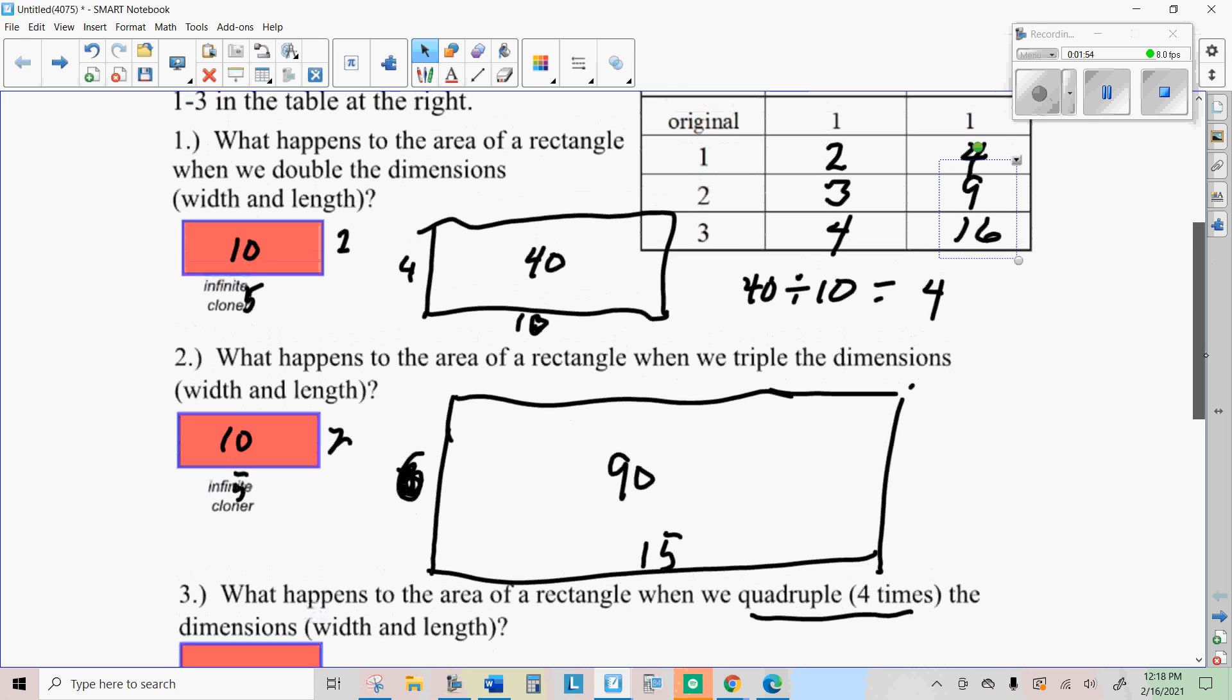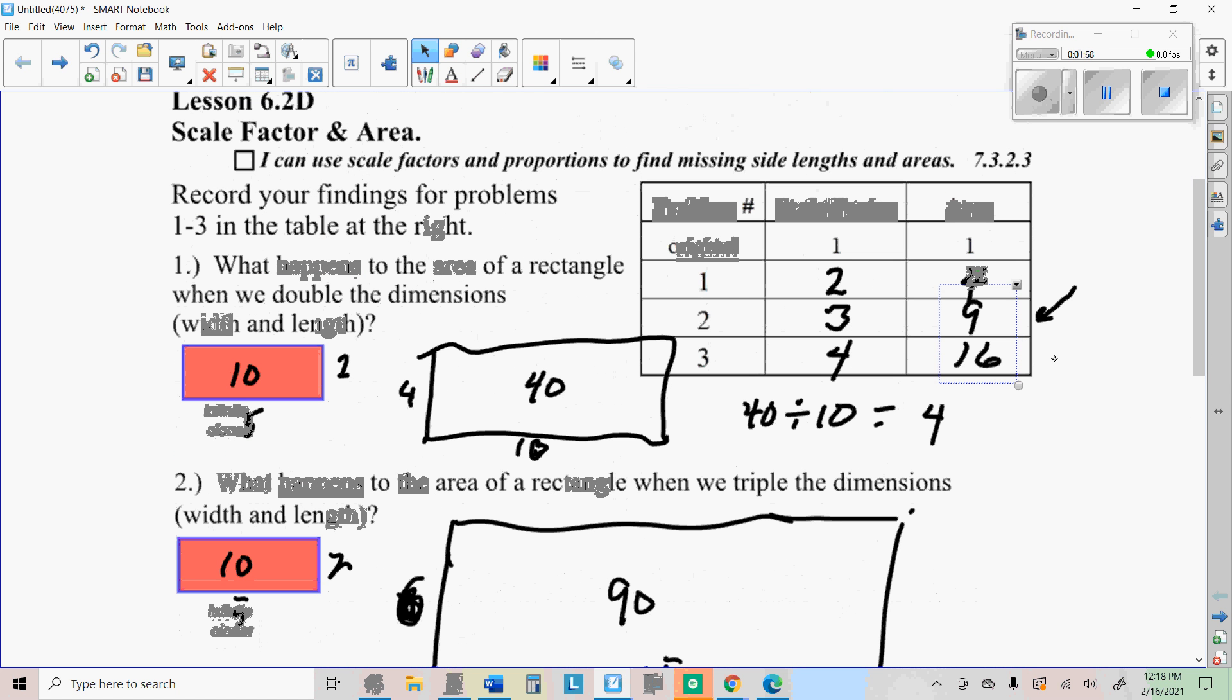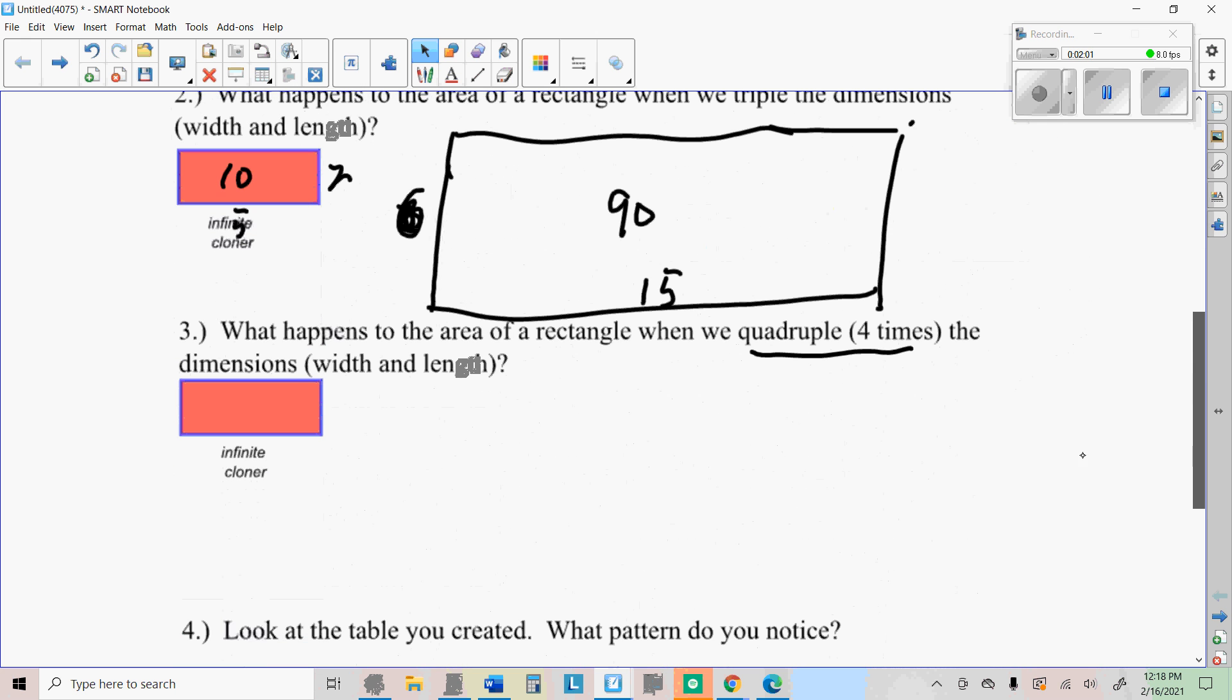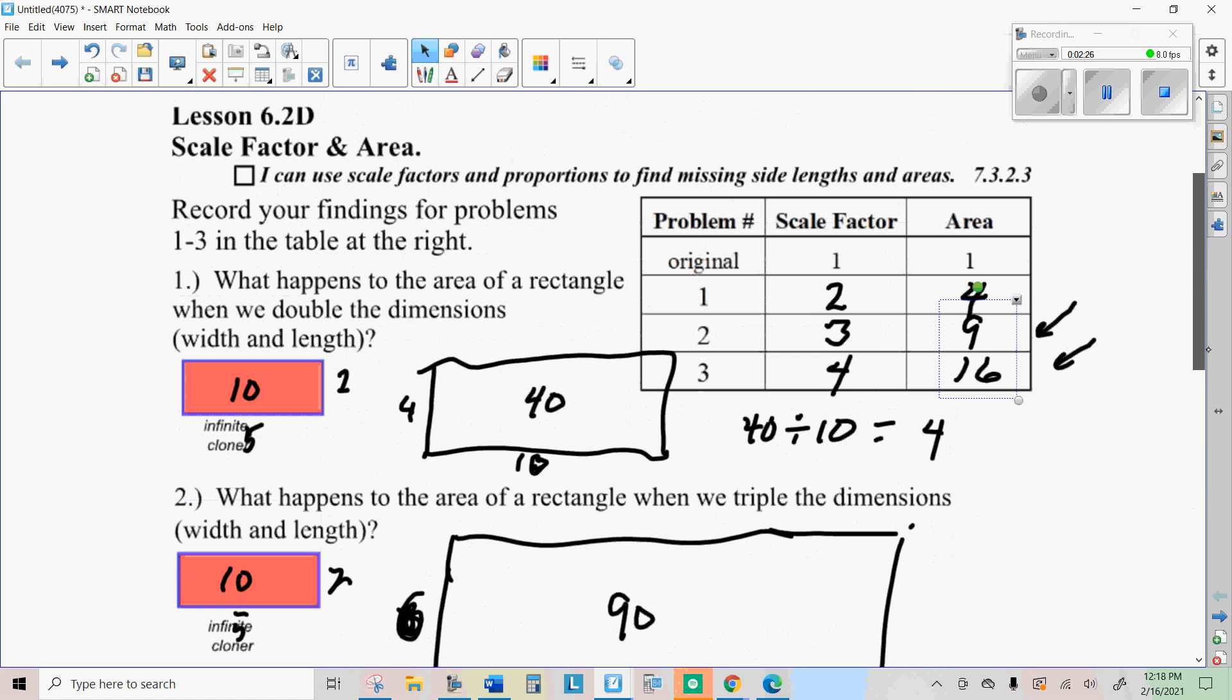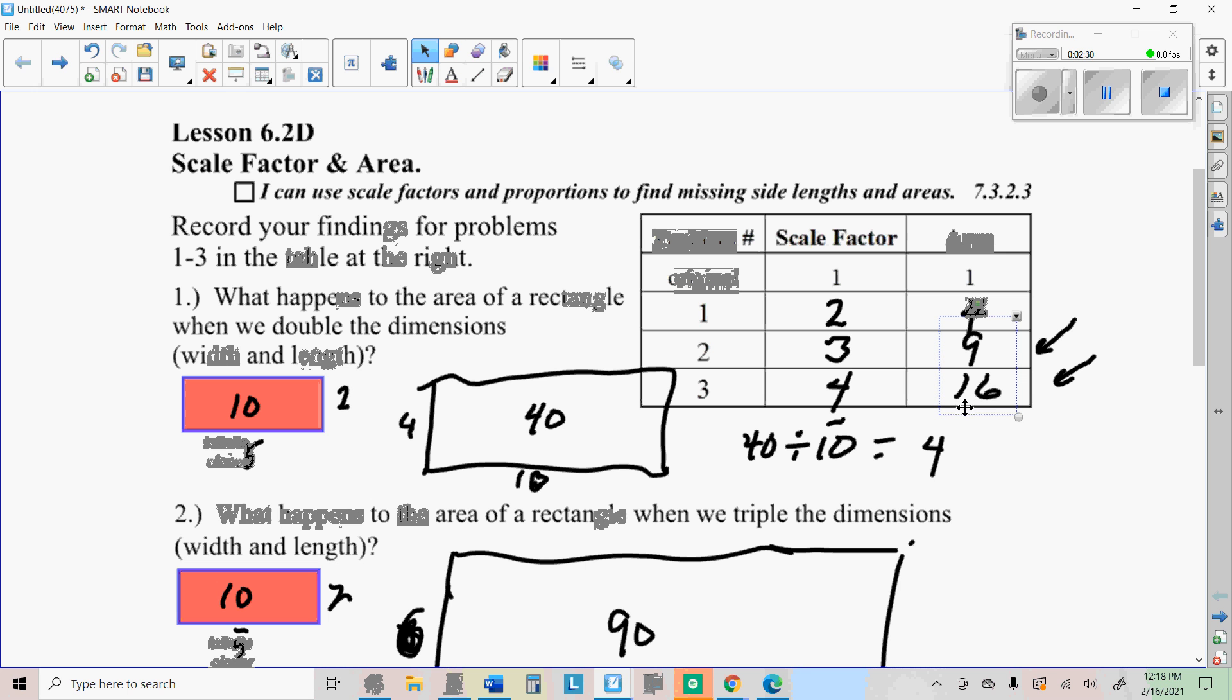You should have found that when you tripled them, your area got nine times bigger. And when you quadruple it, your areas get 16 times bigger. Just to show that again, if you quadruple two, you get eight for the width. And if you quadruple five, you get 20. And eight times 20 is 160 for the area. The original area was 10. 160 divided by 10 equals 16. And so now look at these patterns, you guys. Could you have predicted what the area would be? See if you can figure out what that is.